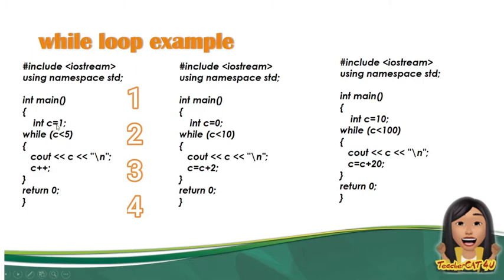Check natin. The value of C is equal to 1. 1 is less than 5, then ipiprint niya yung value ni C, which is 1. Then C++ magiging 2. 2 is less than 5, ididisplay niya yung value 2. Then C++ magiging 3. 3 is less than 5, didisplay niya ang 3. Then 4 is less than 5, didisplay niya ang 4. C++ ulit, 5 na yun. 5 is not less than 5. Kaya ang didisplay niya is 1, 2, 3, and 4.